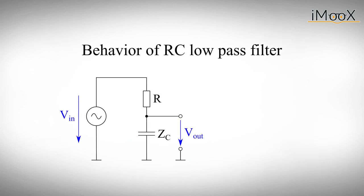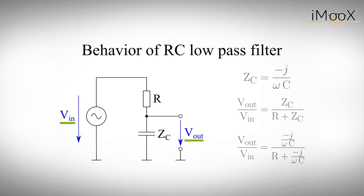If we want to know the frequency behavior of a filter, we actually want to know the answer to the following question. What does the output do in dependency of the input? In other words, we want to know what is the output voltage V out divided by the input voltage V in. As we already know from the voltage divider, this relation can be explained in terms of the respective impedances.